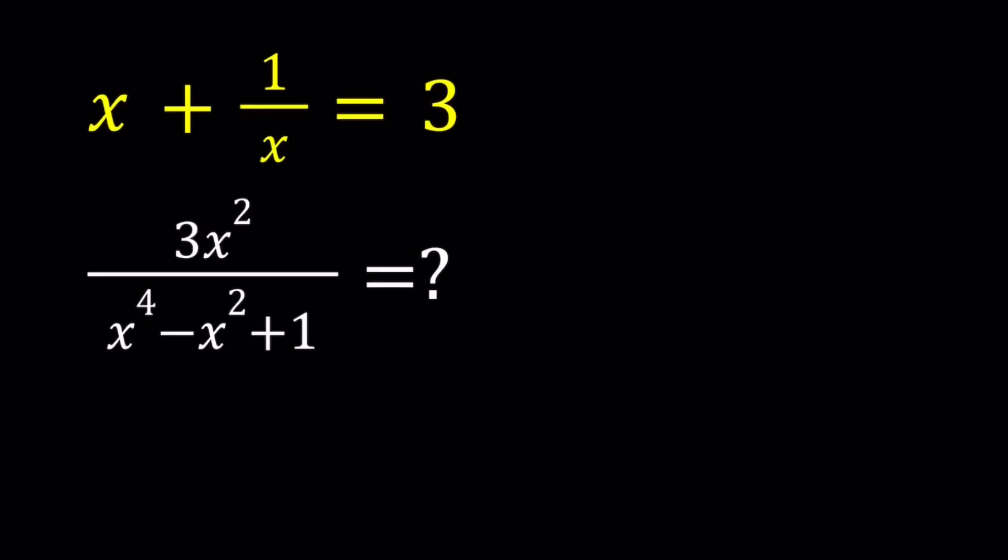Hello, everyone. In this video, we're going to be evaluating an algebraic expression. We're given that x plus 1 over x is equal to 3, and we are supposed to evaluate 3x squared divided by x to the fourth power minus x squared plus 1. I'll be presenting two methods. Let's start with the first one.